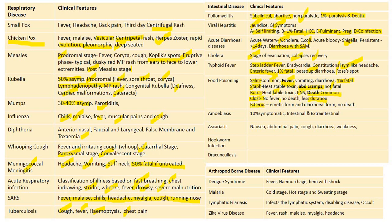Bacillus cereus has both a vomiting form and a diarrheal form. Like staphylococcus, there will not be any death in Bacillus cereus. Amoebiasis: only 10% of cases will be symptomatic; intestinal symptoms and extra-intestinal symptoms will be present. Symptoms include nausea, abdominal pain, cough, diarrhea, and weakness. The same symptoms will be present in hookworm infection.